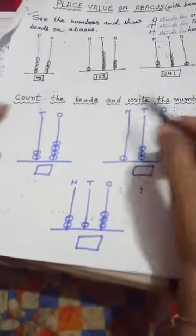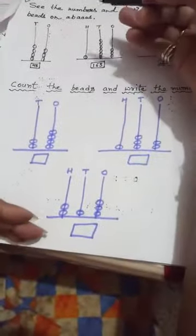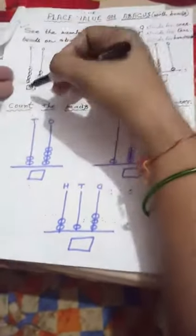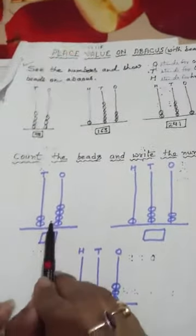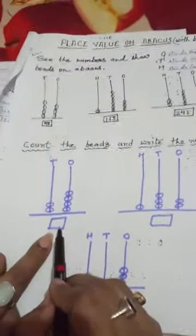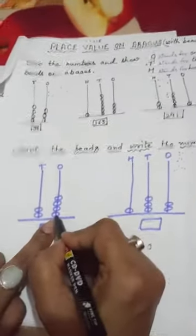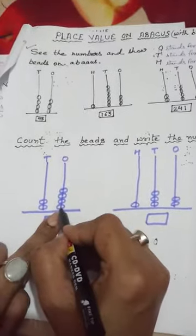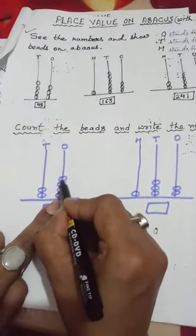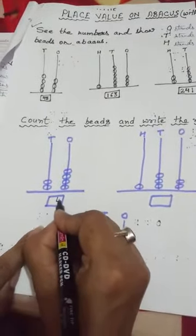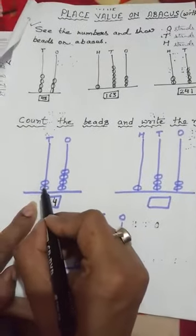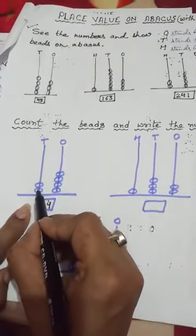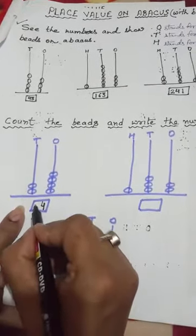Very good. Now count the beads and write the number — this is opposite to the previous activity. Previously, a number was given and we showed the beads; here, beads are given on the abacus and we count them to write the number. Start with ones place value: 1, 2, 3, 4 — so we write 4. In tens place value, count: 1, 2 — so we put 2 here.